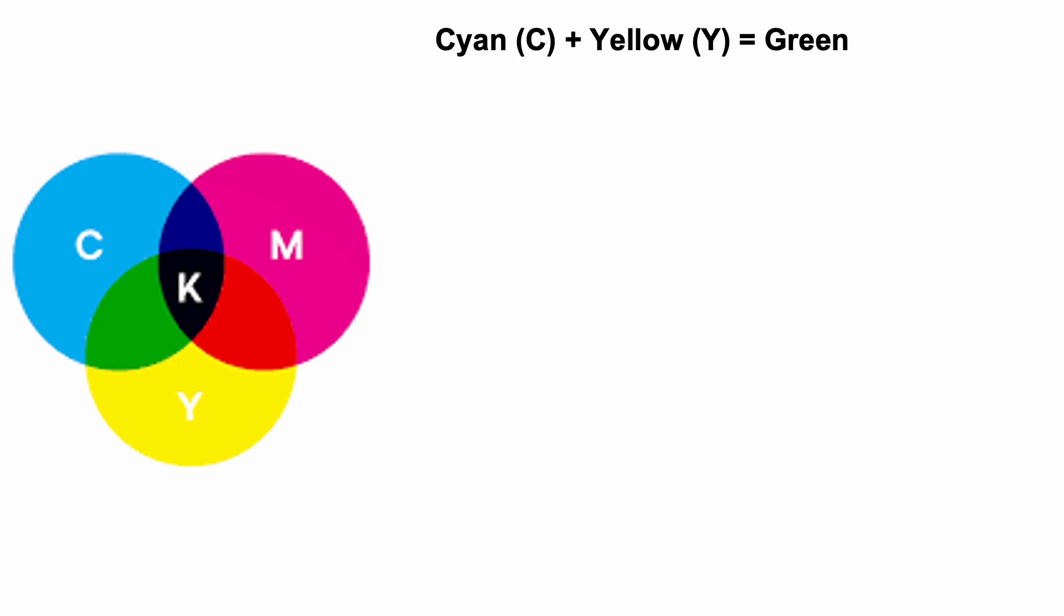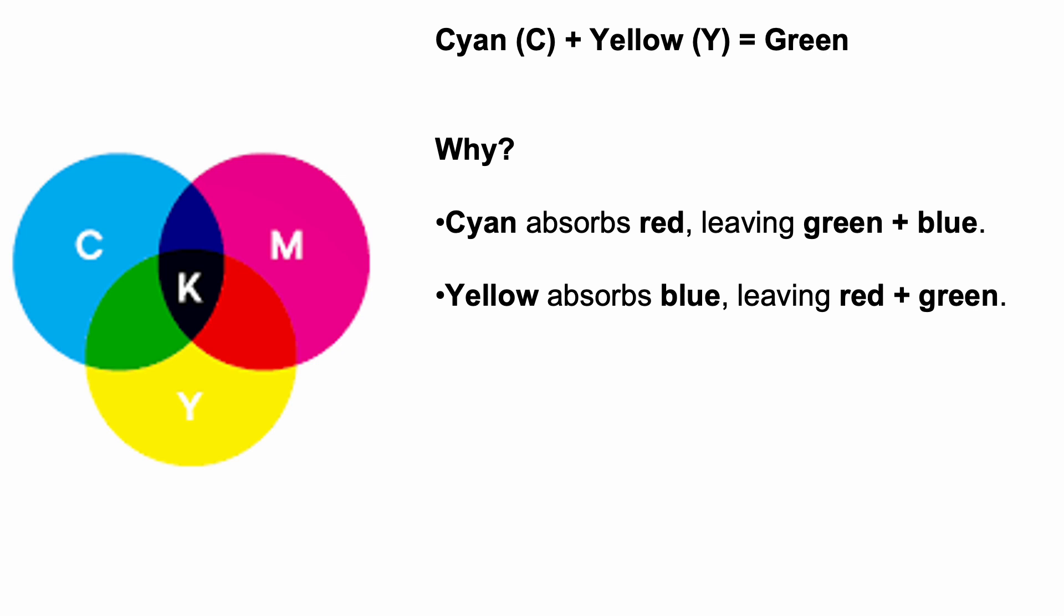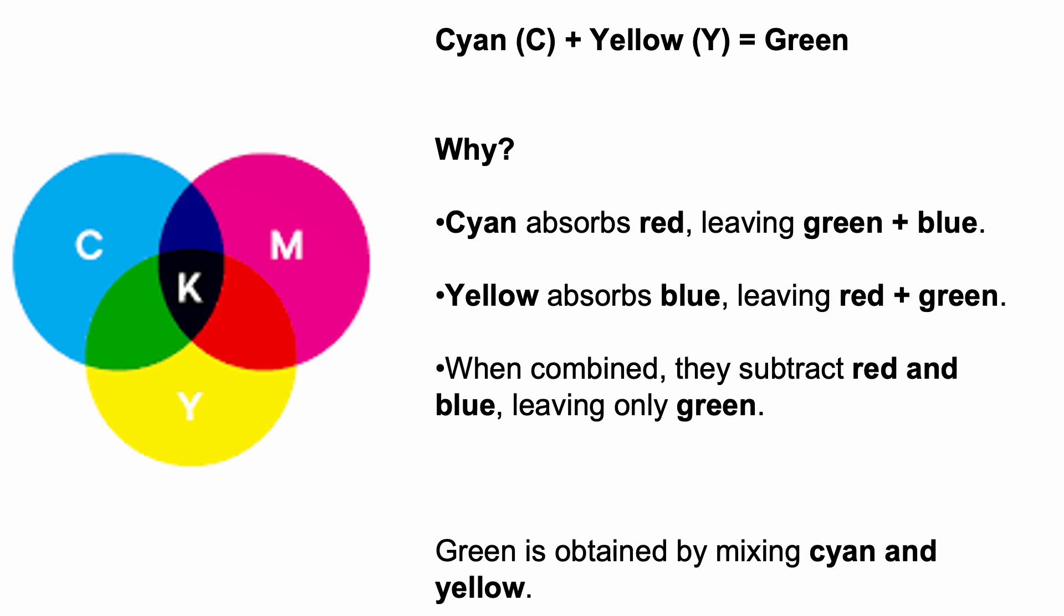Now cyan plus yellow equals green. Why? Cyan absorbs red, leaving green and blue. Yellow absorbs blue, leaving red and green. So when combined, they subtract red and blue, leaving only green. Green is obtained by mixing cyan and yellow.